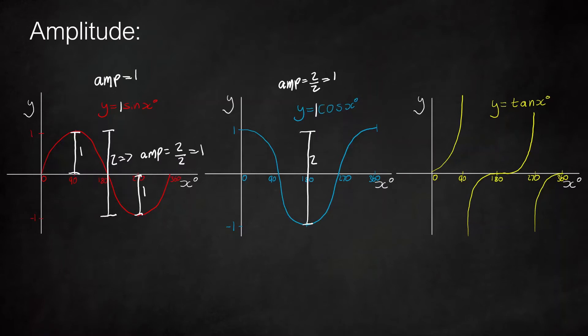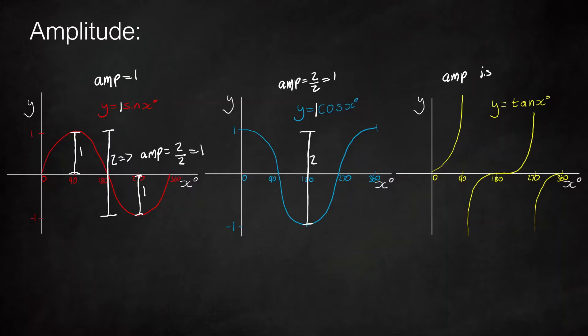For tan, the amplitude is undefined because as you can see the graph goes shooting up to infinity — there is no maximum, it goes up to infinity, so here we say the amplitude is undefined.